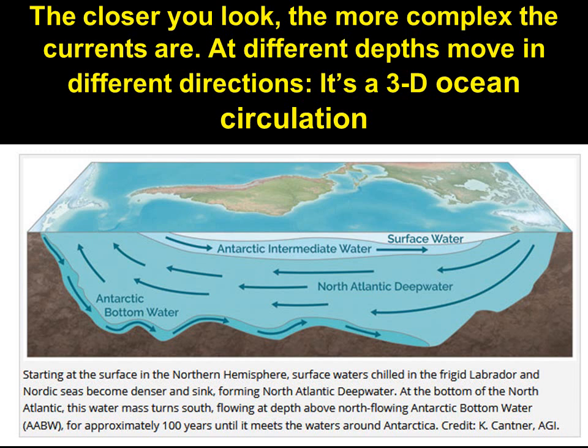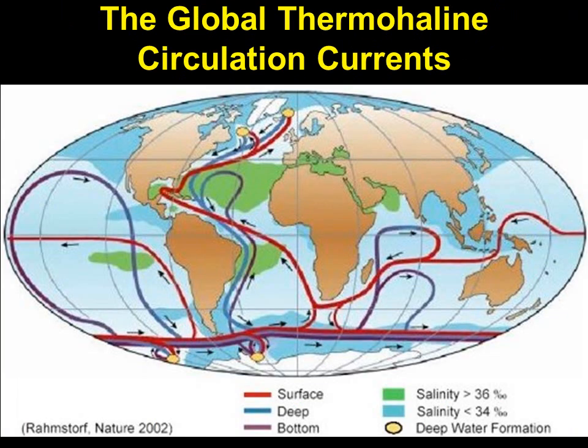If you really want to look at the currents, they get more complicated on a small scale — there's Antarctic Bottom Water, North Atlantic Deep Water, and Antarctic Intermediate Water, all moving in different directions. But we can get a good feel for total ocean currents by looking at a map: surface currents are red, deep currents are blue, and bottom currents are purple, mostly along the Antarctic.